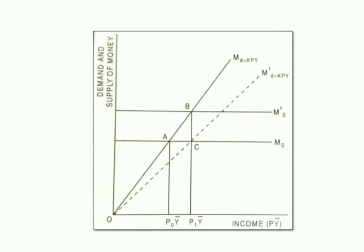An increase in money supply from MS to M'S will create an excess supply of money at the old income level. As a result, individuals will rid themselves of excess money balances by increasing their spending on goods. As a result, price level rises and the nominal income increases.